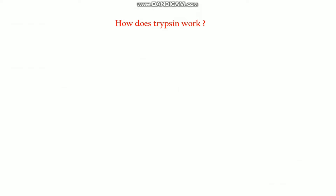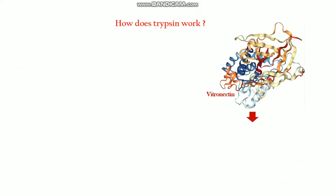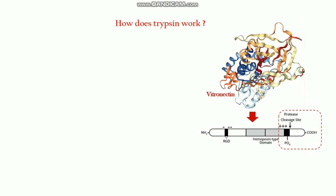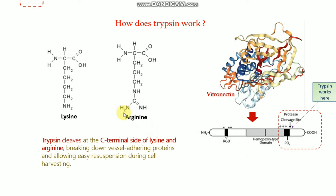How does trypsin work? As mentioned earlier, there are two proteins responsible for cell attachment — vitronectin and fibronectin. Basically, trypsin works at the C-terminal of vitronectin or fibronectin, and it cleaves this attachment site. Trypsin cleaves the C-terminal side of lysine and arginine, breaking down the vessel-adhering proteins and allowing easy resuspension during cell harvesting.